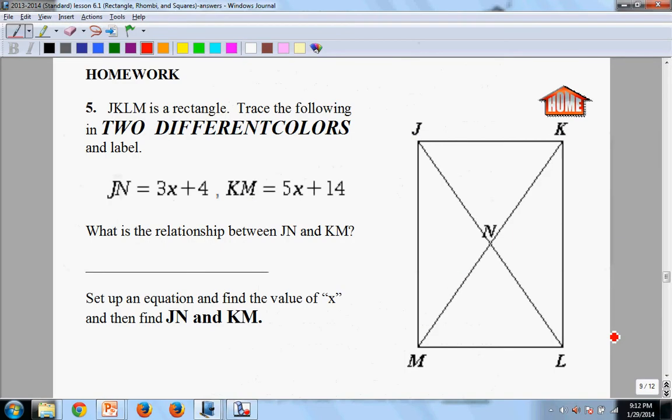Taking a look at problem number five, it says JKLM is a rectangle. Trace the following in two different colors and label. Very important that you trace and label in two different colors. So we're going to trace JN, trace J to N, that's going to be in green, and we're going to label in green, or you can use whatever color you have handy.